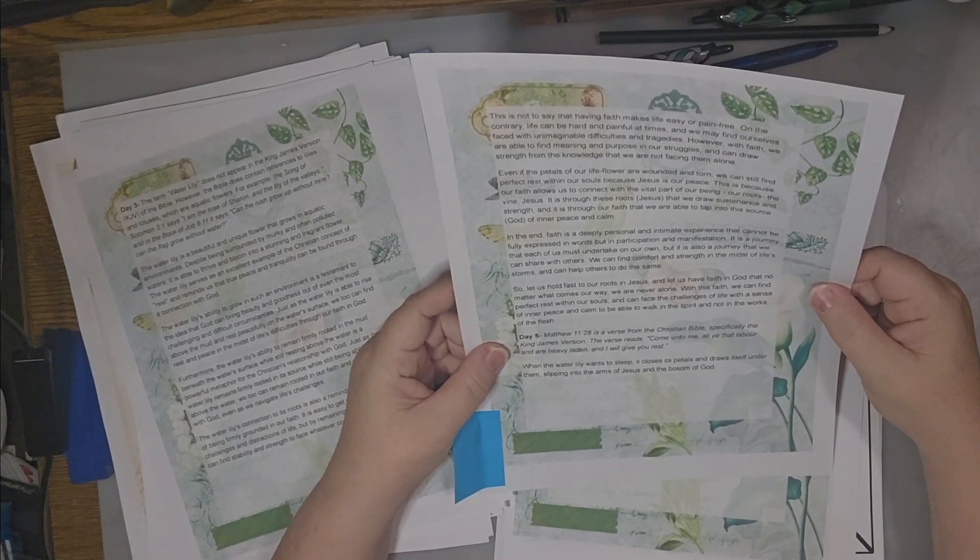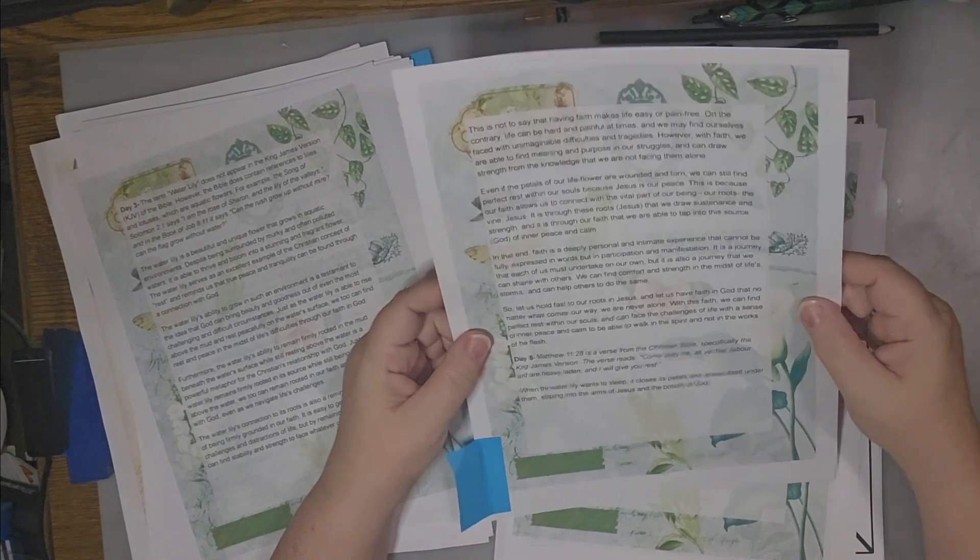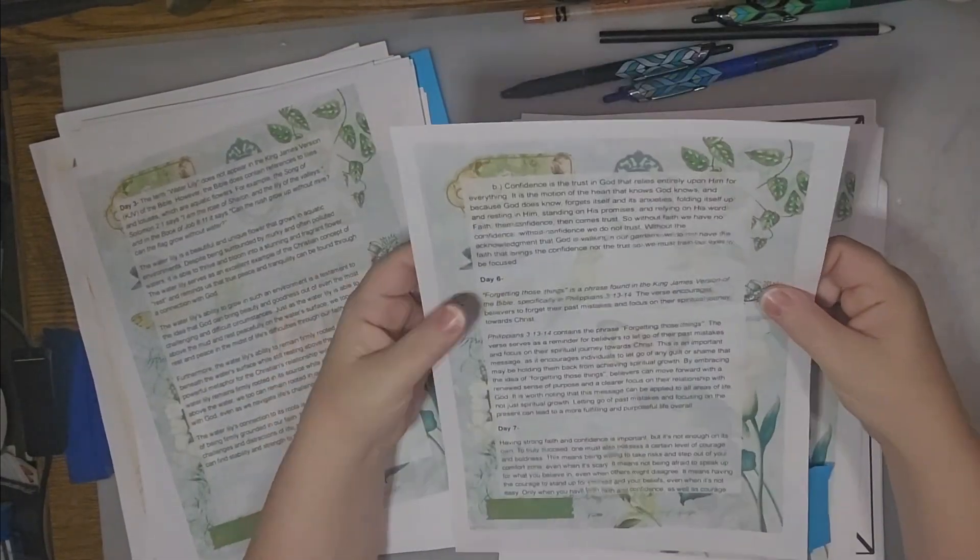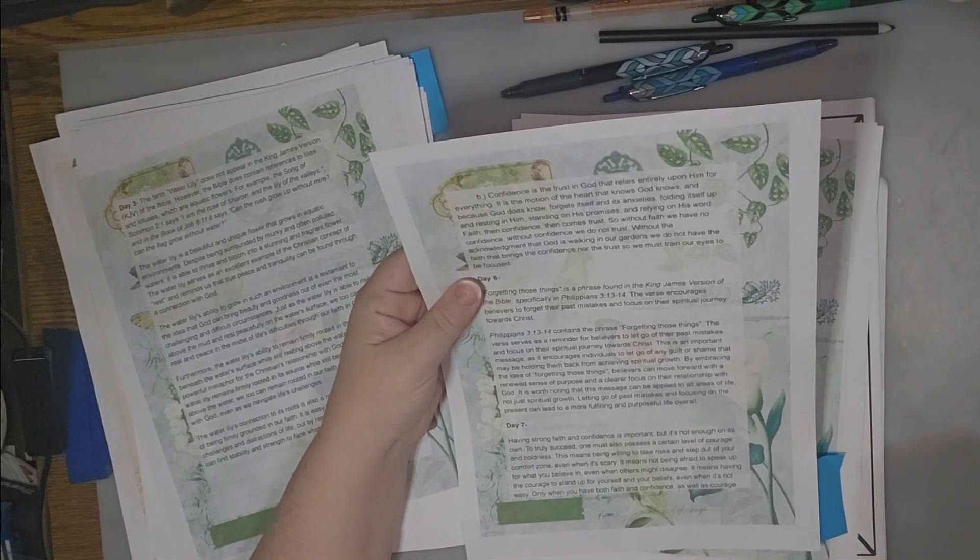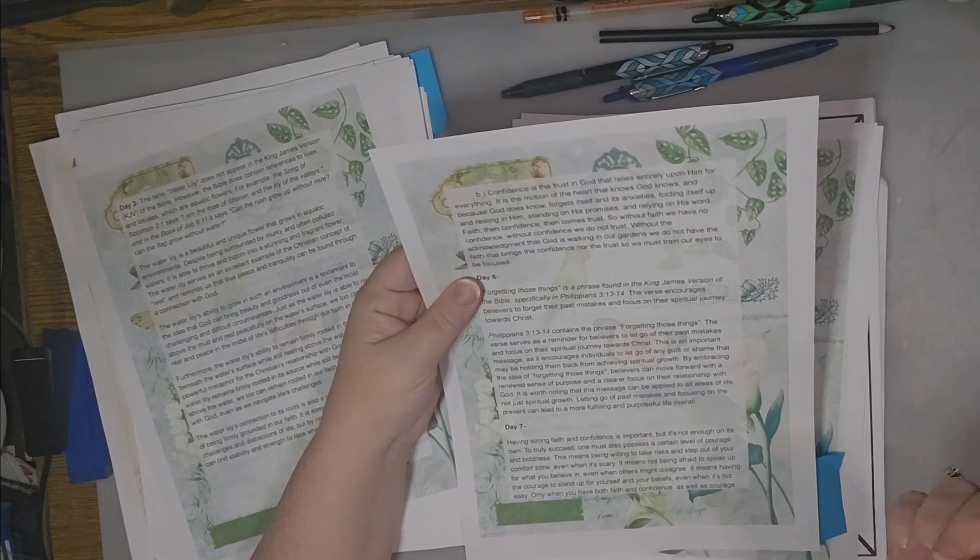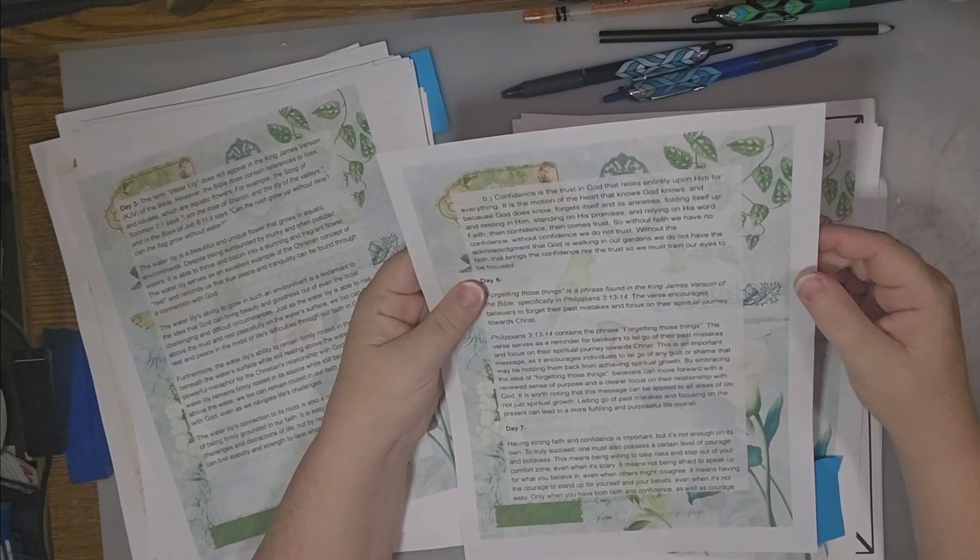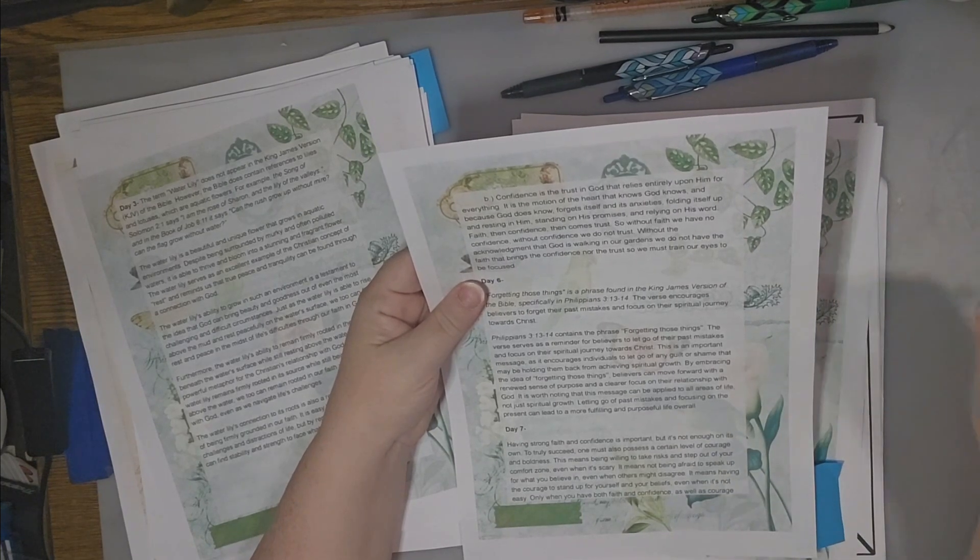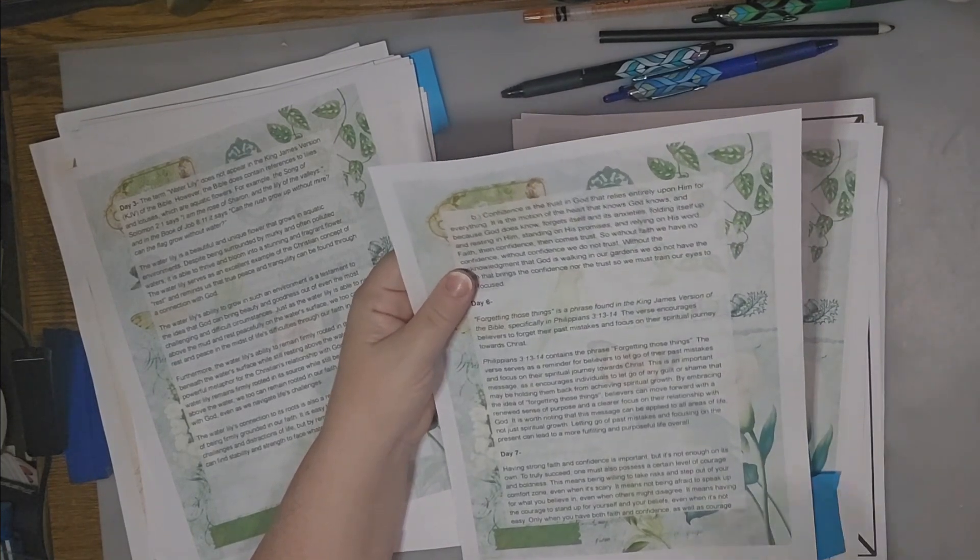When the water lily wants to sleep, it closes its petals and draws itself under them, slipping into the arms of Jesus around the bosom of God. Today we're going to be talking about confidence. Confidence is the trust in God that relies entirely upon Him for everything. It is the motion of the heart that knows God knows, and because God does know, forgets itself and its anxieties, folding itself up and resting in Him, standing on His promises and relying on His word.